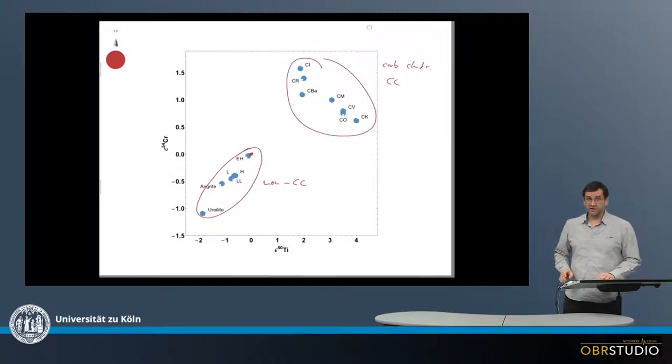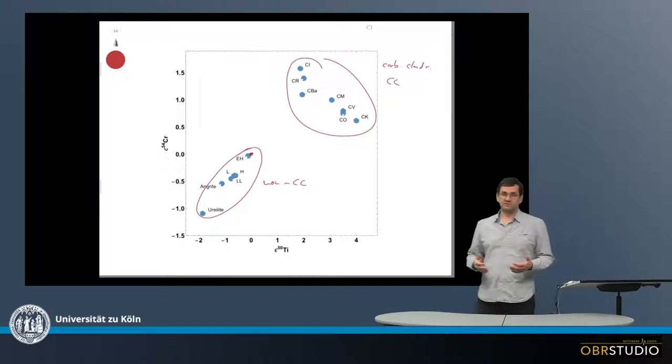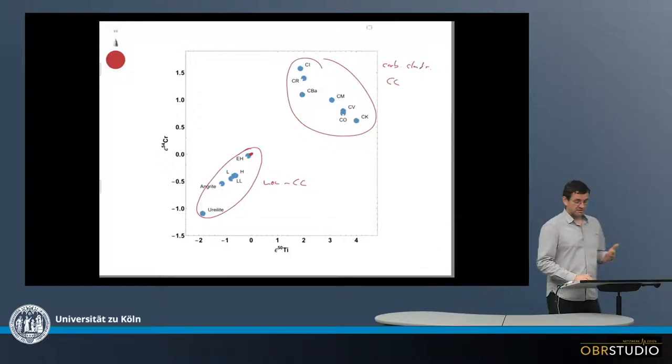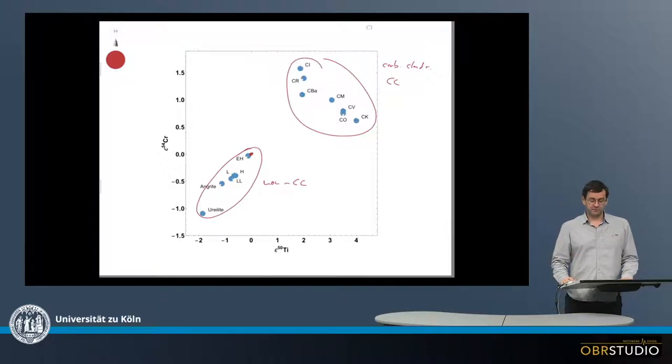Now nucleosynthetic anomalies cannot be explained by mass-dependent processes. Typically, nucleosynthetic anomalies are simply explained by admixing a component. So there might be a component with a very different isotope composition very far up here.